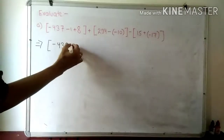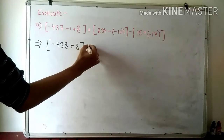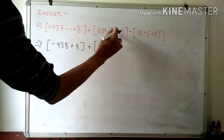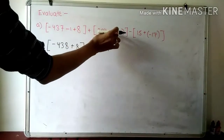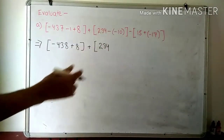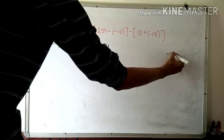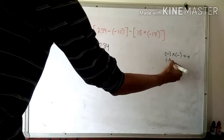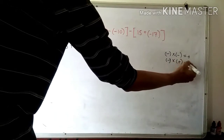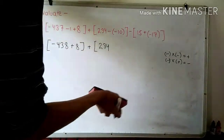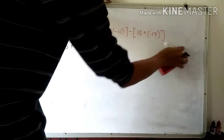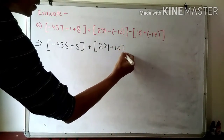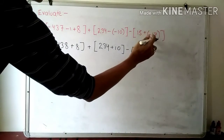Next is plus symbol, common bracket 234. Whenever a bracket is present between two symbols, we always multiply the sign. As we know the integer rule of multiplication: when minus multiplied by minus, the sign becomes positive. Similarly, when minus multiplied by a positive symbol, the sign will be negative. So minus multiplied by minus 10 becomes plus 10. Again we write down 15, and plus into minus becomes minus 17.